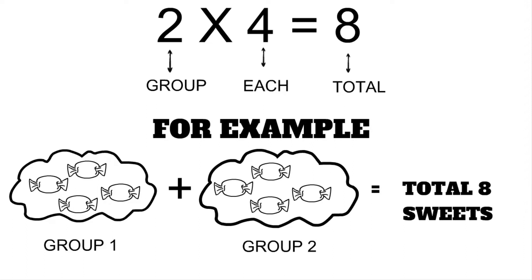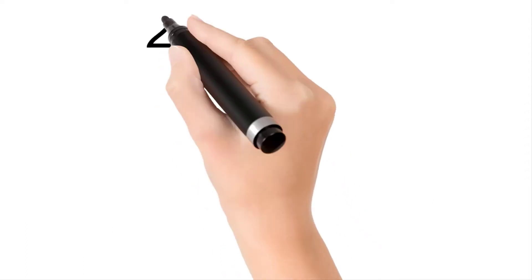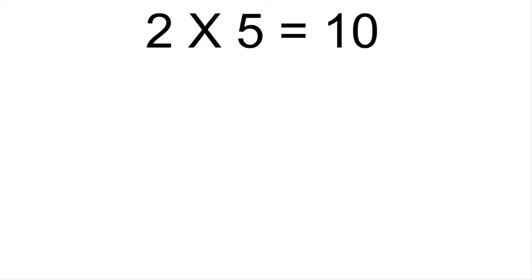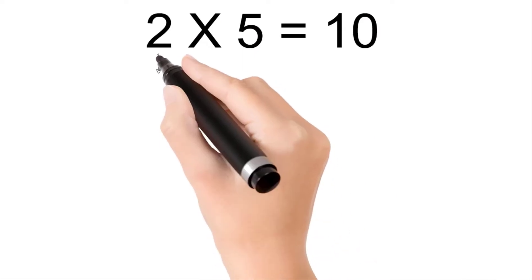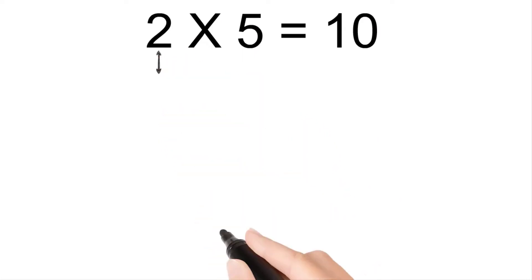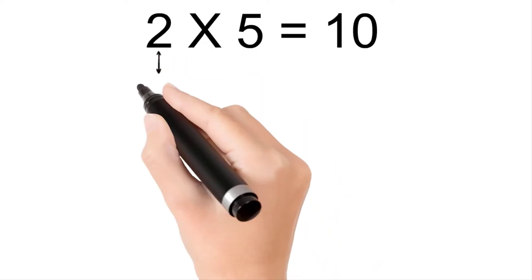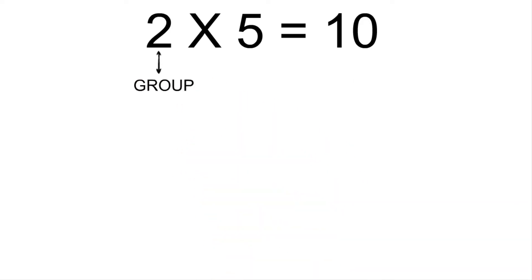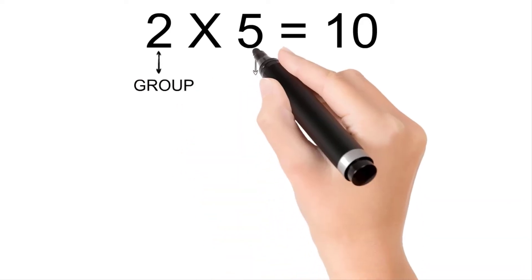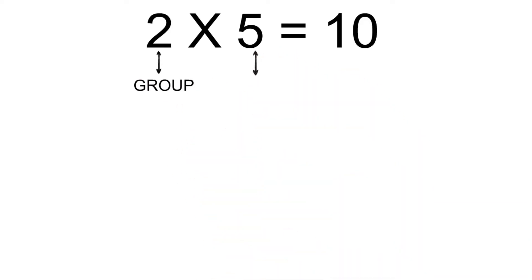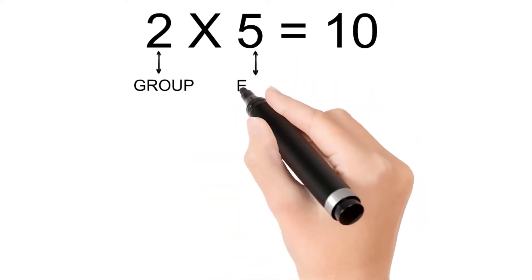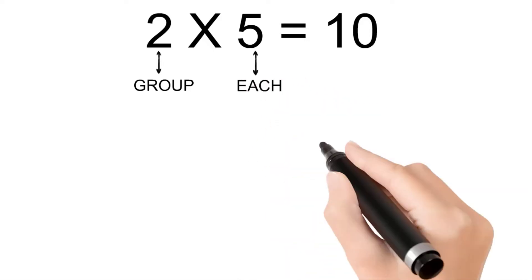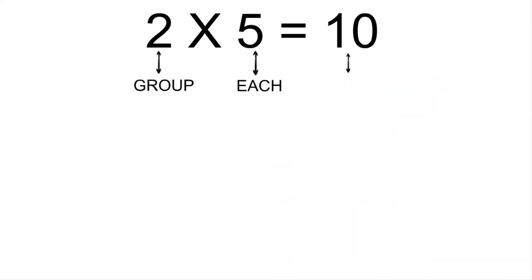Two times five is ten. The two is group, five is each, and ten is total.